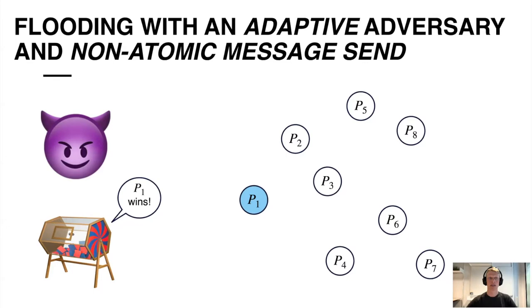Let's try to analyze this flooding procedure with an adaptive adversary. Here we have two options, either to consider non-atomic or atomic message sent. So if we first assume non-atomic message sent, then the adversary has the possibility at the moment p1 wins and tries to send out the block. Then the adversary will learn that p1 is sending out the block and can now corrupt him.